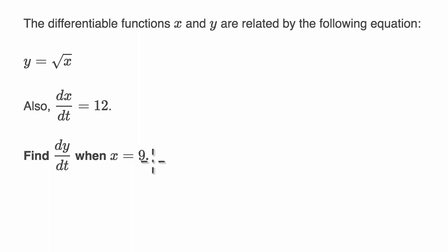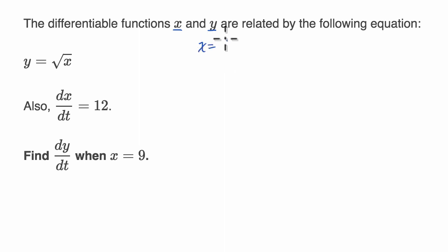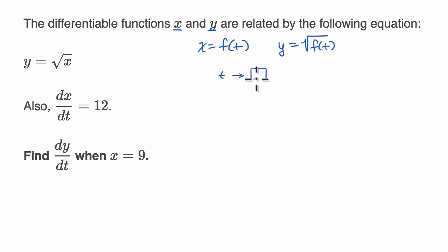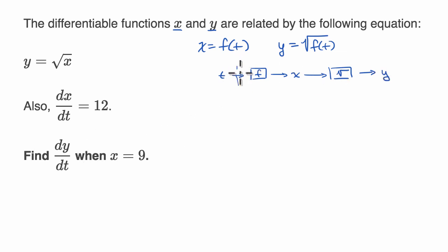Let's make sure we understand this. Both x and y are functions — arguably both functions of t. Y is a function of x, and x is a function of t, so y could also be a function of t. If x equals f of t, then y equals the square root of f of t. You could think of it as: t goes into function f to produce x, then x goes into the square root function to produce y — one big composition where y is a function of t.